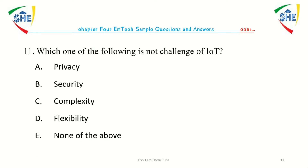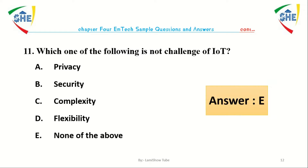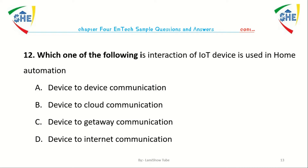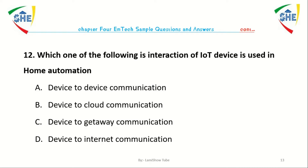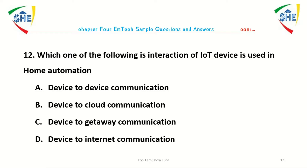Question number eleven: Which one of the following is not a challenge of Internet of Things? Privacy, security, complexity, flexibility, and all of the above. Question number twelve: Which one of the following interaction of IoT device is used in home automation? A. Device to device communication, B. Device to cloud communication, C. Device to gateway communication, D. Device to internet communication.